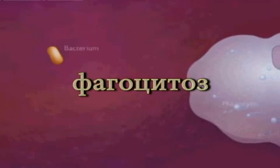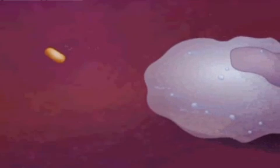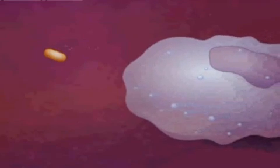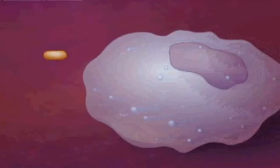In phagocytosis, phagocytes are attracted to the area of invasion by chemical products of the microorganism, phospholipids released by injured mammalian cells, or by components of the complement system.